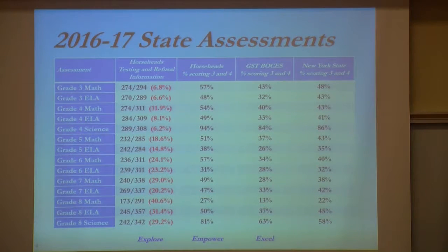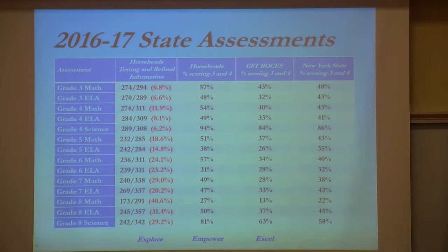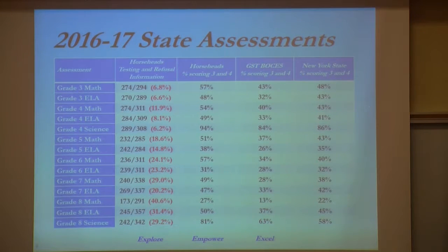If you look at the data, the individuals who refuse — we already know that many of those students would actually raise our percentages, because a lot of the students refusing at this point are some of our best students. That's something we're going to have to work on, and it's required by the state. As we compare to New York State, we have a couple of areas to focus on: grade 5 math is stagnant, and grade 5 ELA shows some decrease versus New York State, as well as grade 7 ELA.